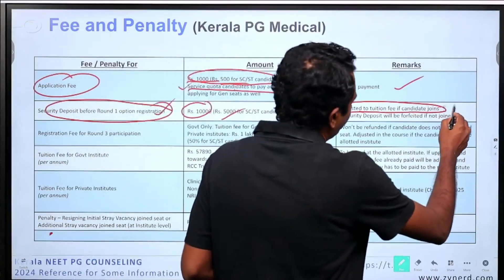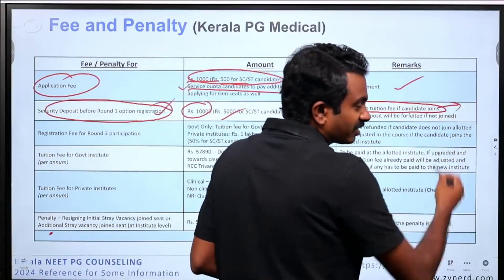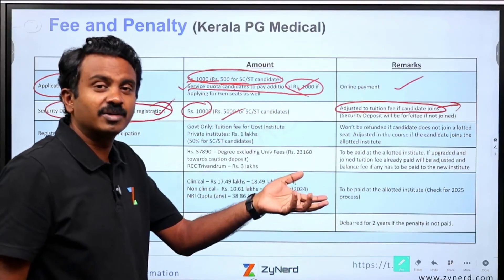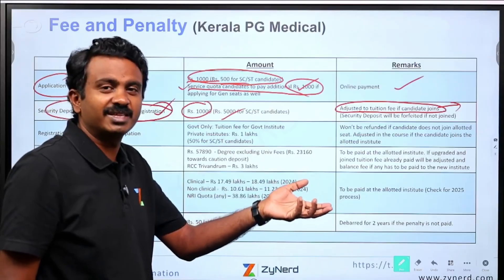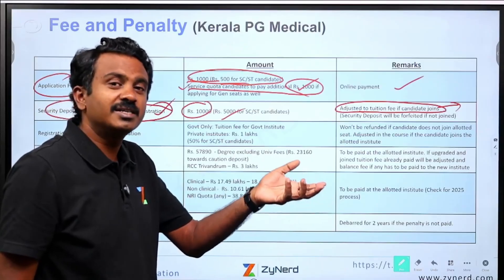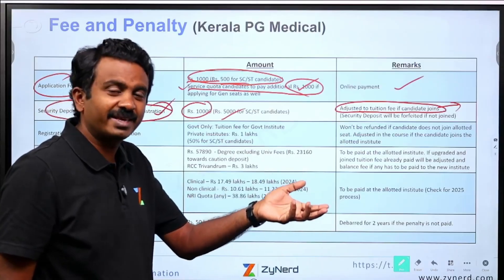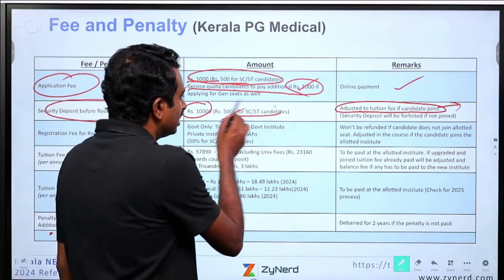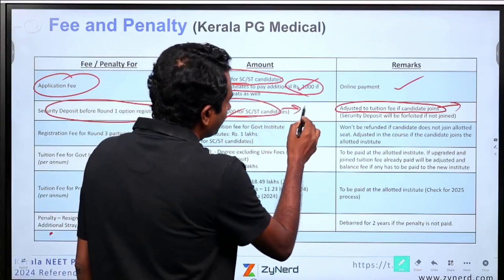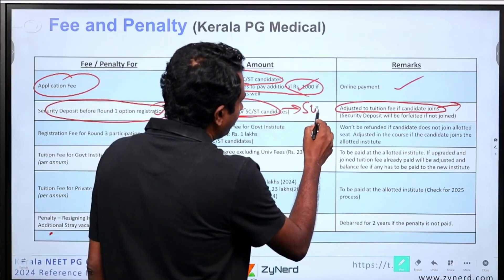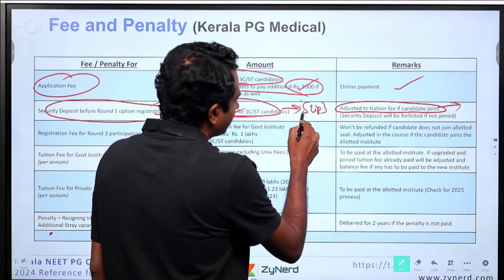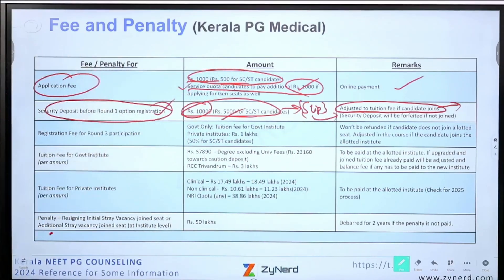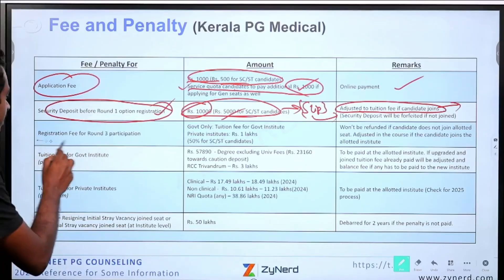So basically, if you are going to pay, let us say 57,000 plus 23,000 at the time of joining the institute, instead of making that full payment, you will pay 10,000 less. There is a fee payment slip that you will get, which you need to take to the institute when you are paying 10,000.